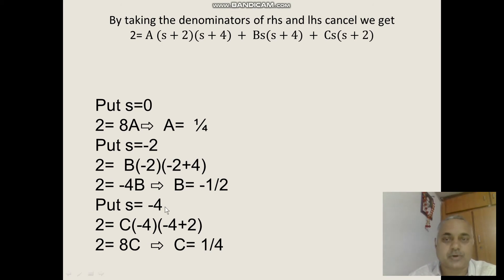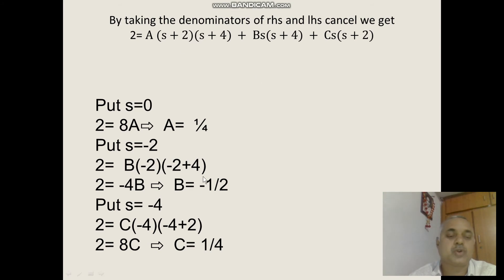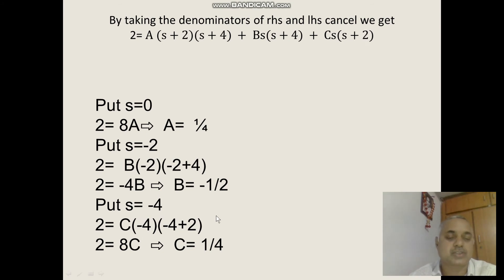Put s equal to minus 4. Then 2 is equal to C into minus 4 into minus 4 plus 2, that is C into minus 4 into minus 2, which gives 8C equal to 2. So C is equal to 2 by 8, that is equal to 1 by 4.